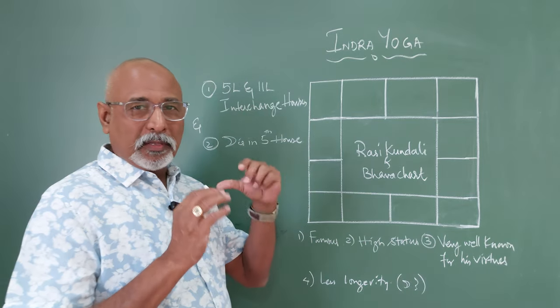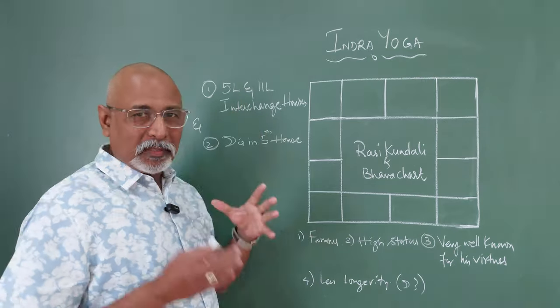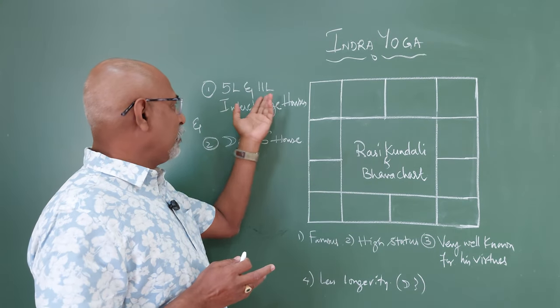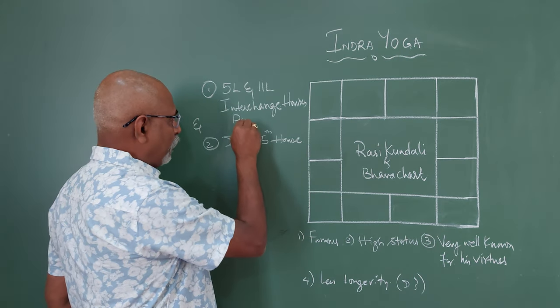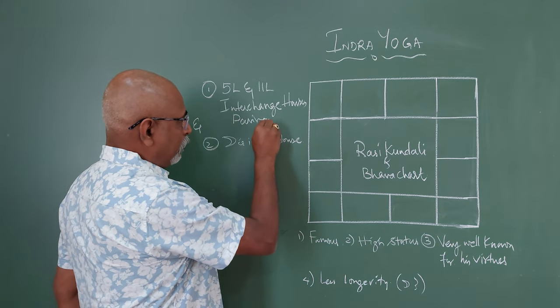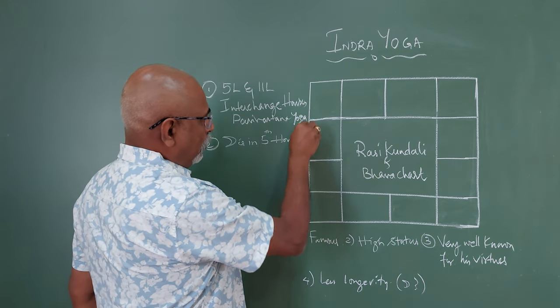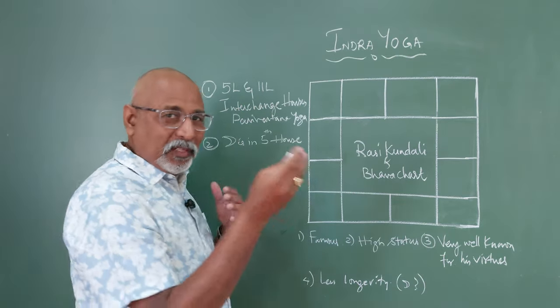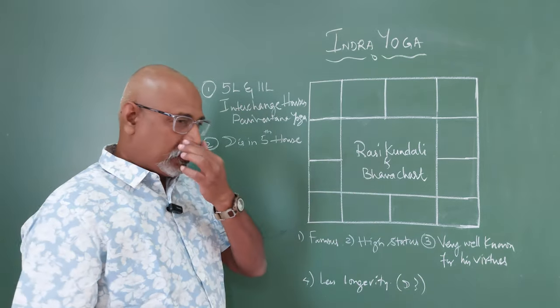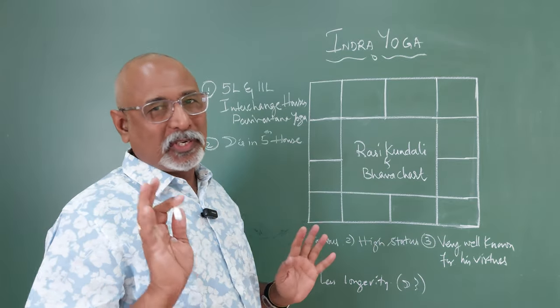The criteria for the Yoga is that the 5th and the 11th Lord, the 5th Lord and the 11th Lord have to exchange houses, which is also known as Parivartana Yoga. So the 5th and the 11th Lord exchange houses. That is, the 5th Lord is posited in the 11th house, and the 11th Lord is posited in the 5th house.